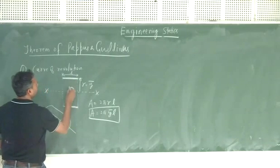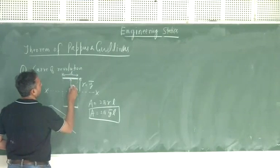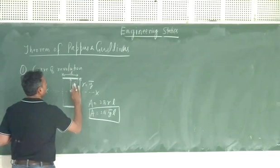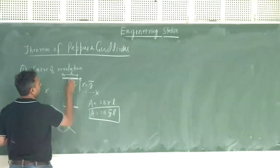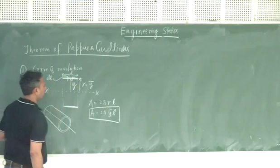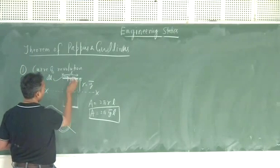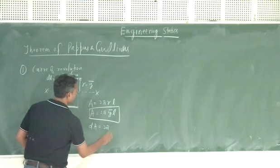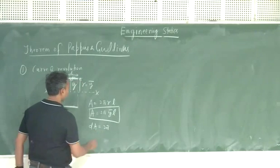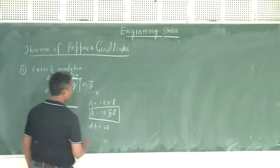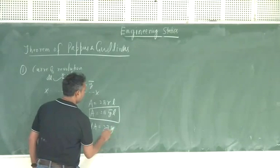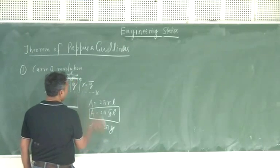Now if you take a small element, the distance in this case is k, and let us assume that equals y-bar. What I said was that if you are going to revolve this small element dL, you will get 2π. Since it is fixed at r, r will be the same. Y is still the same. So 2πy and your arc length dL.